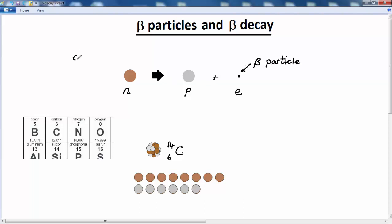If you consider the charge involved, the neutron has zero charge, the proton has a charge of plus one, and that has to be balanced by the electron which has a charge of minus one.